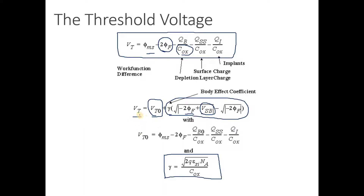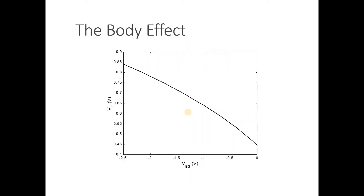So threshold voltage is the minimum voltage required to get things working — specifically, the minimum voltage required to facilitate the creation of the channel. It is expressed as VT = VT0 + f(VSB). This brings us to the body effect: when you apply a certain potential VSB, the threshold voltage keeps on increasing.